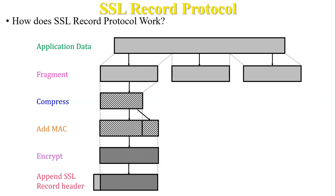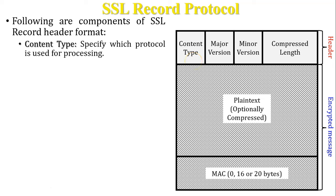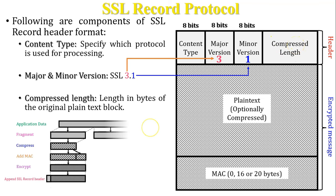The SSL record header format contains the following components: content type (8 bits) — specifies which protocol is used for processing. Major version (8 bits) and minor version (8 bits) — for example, SSL version 3.1 means 3 is the major version and 1 is the minor version. Compressed length (16 bits) — indicates the length of the original plain text block.